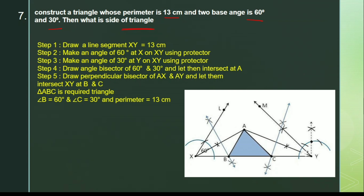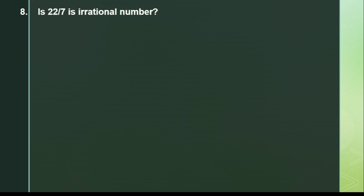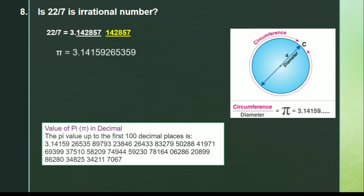Next question: is 22/7 a rational number? The question is whether pi is a rational or irrational number — this is very confusing. I have clarified why 22/7 is a rational number: it is in the form of p/q. Also, if you do its decimal expansion, the digits 142857 repeat, making it a terminating repeating decimal — so it is rational.